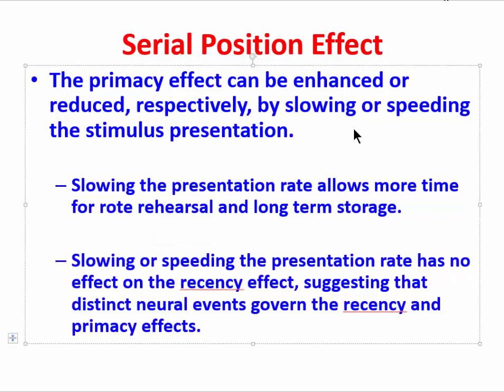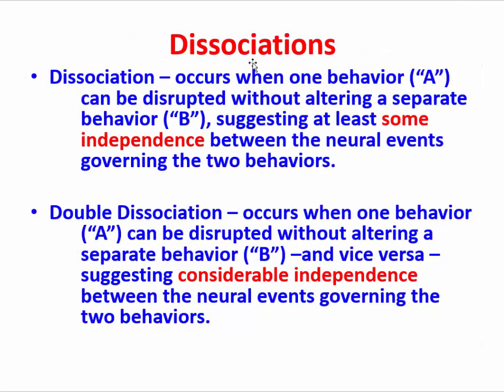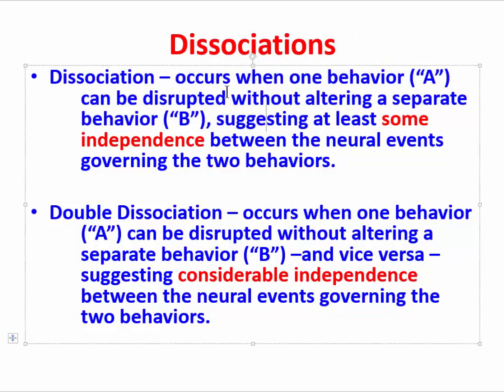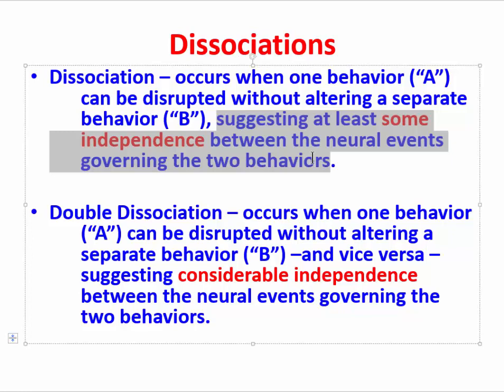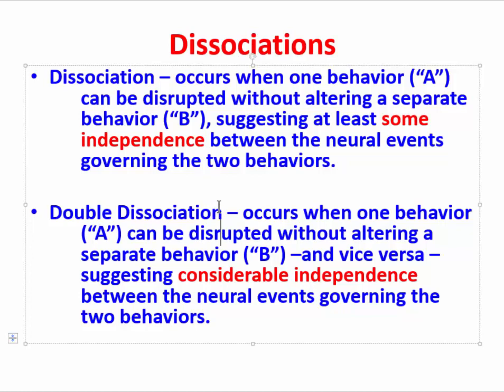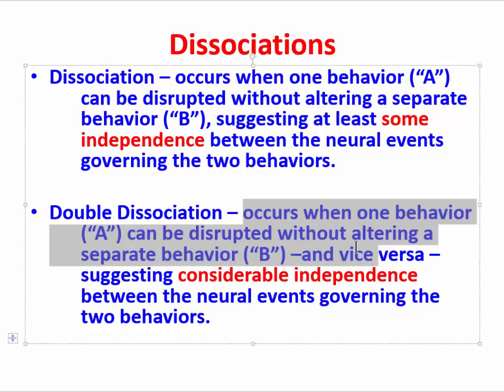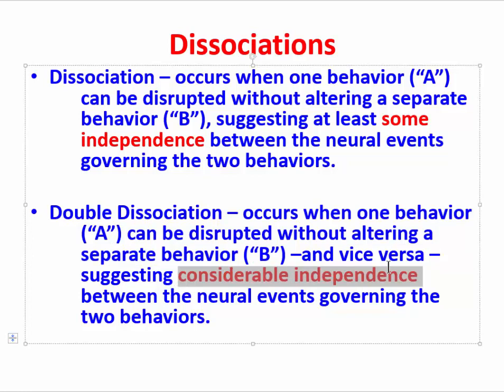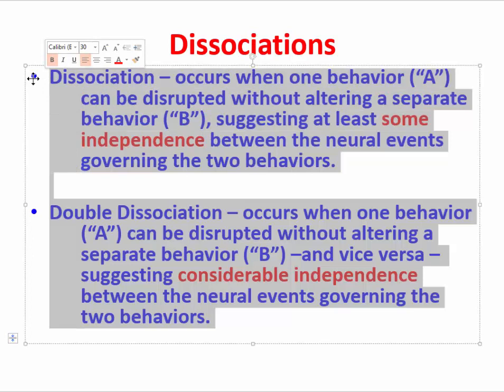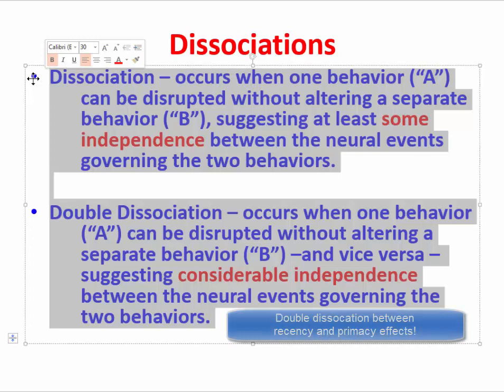These distinct neural events bring us to an issue we've addressed once before, and this will be the final issue in our video: the topic of dissociations. We can define a dissociation as something that occurs when one behavior — say behavior A — can be disrupted without altering a separate behavior B, suggesting that at least some independence exists between the neural events governing these two behaviors. Sometimes we can doubly dissociate two events, where behavior A can be disrupted without altering behavior B, and vice versa, suggesting considerable independence between the neural events governing both. In the study of memory, we can separately and doubly dissociate the serial position effect, showing that distinct neural events are governing the recency effect and the primacy effect.